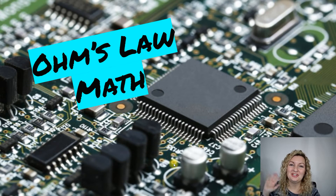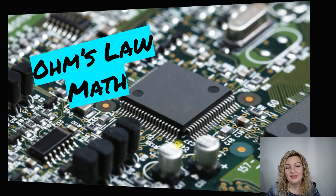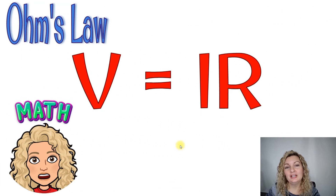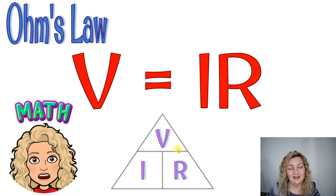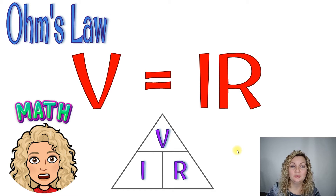Hey everybody, Mrs. Bodishan here. So today we're going to be talking all about Ohm's Law math. So let's go ahead and look at our equation for Ohm's Law. It is V equals IR, and we're going to be using this triangle to help us solve these math problems really, really simply.